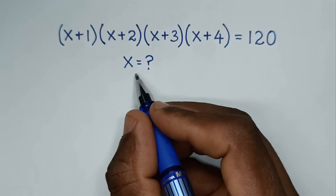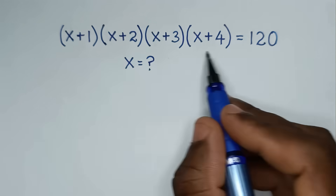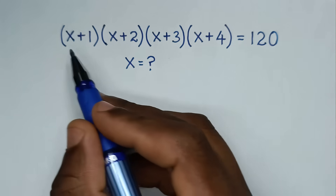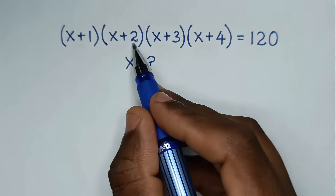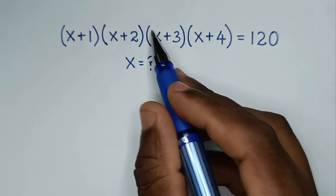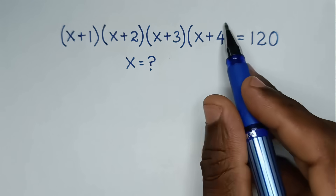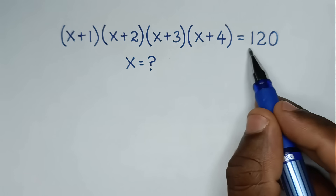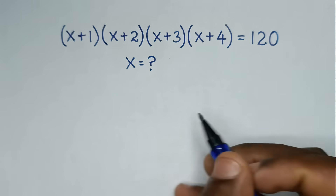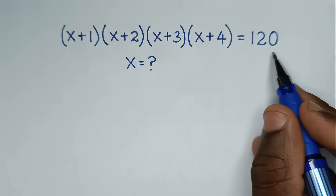Hello, you are welcome to solve this math problem, which is (x+1)(x+2)(x+3)(x+4) = 120. We need to find the values of x from this equation.